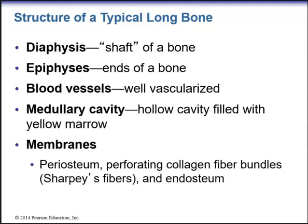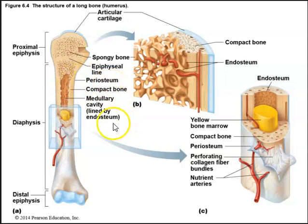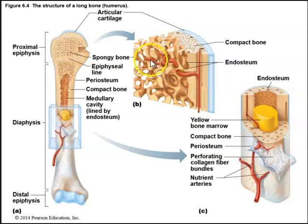A typical long bone has a long shaft (the diaphysis), the proximal and distal epiphyses, a medullary cavity, the periosteum as the outer connective tissue lining, and the endosteum lining the medullary cavity. Within the medullary cavity is yellow bone marrow. The outer covering is compact bone, while the inner spongy bone is made up of trabeculae with spaces containing yellow bone marrow.